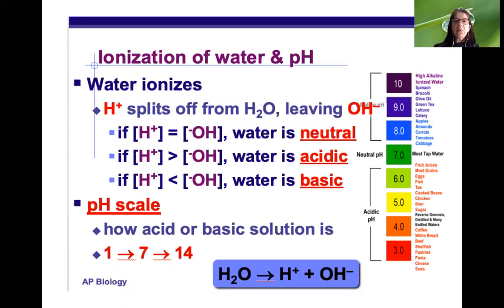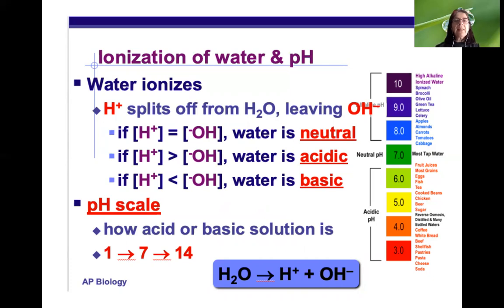Here's a slide borrowed from AP bio teacher Kim Foglia on ionization of water and pH. When water ionizes, hydrogen ions split water leaving hydroxide ions. If the concentrations of both are equal, water is neutral, or pH is 7. pH is a scale that measures the concentration of hydrogen ions. If there are more hydrogen ions than hydroxyl ions, the solution is acidic and pH is less than 7. If hydrogen ion concentration is less than hydroxyl ion, the solution is basic and pH is higher than 7.